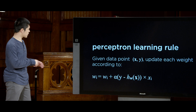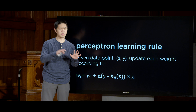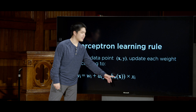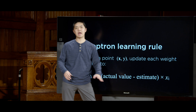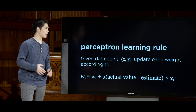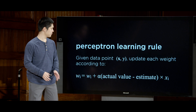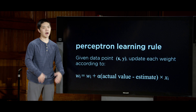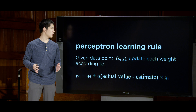What does the weight update look like? We update each weight to be the original weight plus some additional expression. In that expression, y is the actual output, and hypothesis(x) is what we predicted. So we look at the actual value minus our estimate. Based on the difference, we might want to change our hypothesis. If the actual value and the estimate are the same — we correctly predicted the category — then actual minus estimate equals 0, so the weight doesn't change.